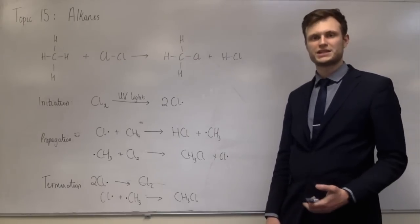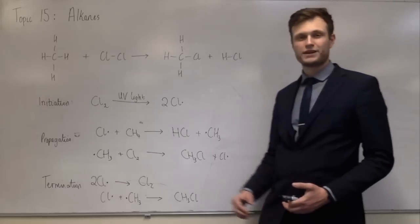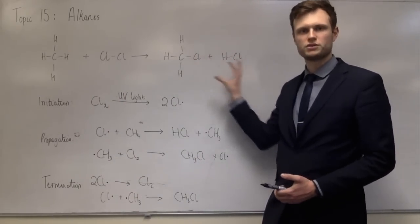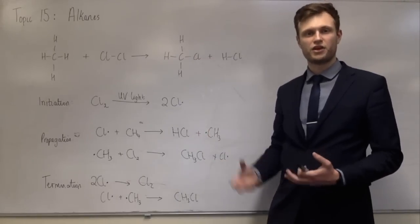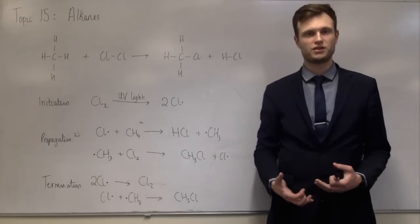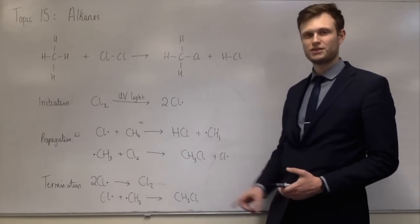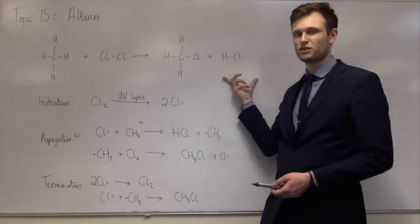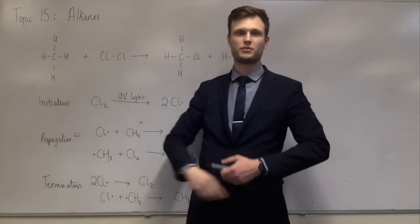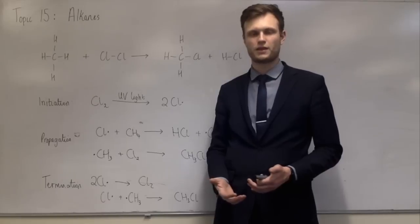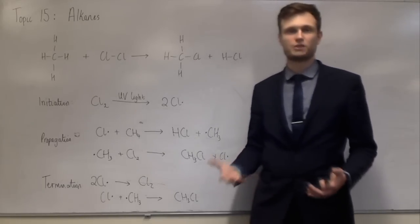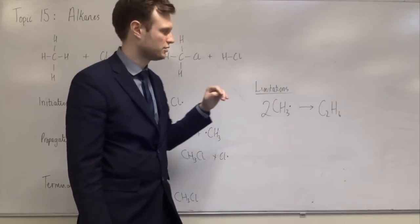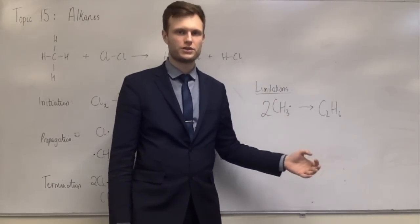The third termination step — two methyl radicals combining to form ethane — is a limitation of this reaction. Ethane is not a desired product or reactant; it's something which shouldn't be there and has to be removed at the end. This is the limitation they often ask you to draw or write an equation for, because it follows logically from the mechanism. The other limitations they may ask you about without requiring equations.